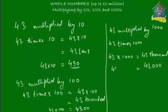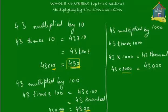So what's the pattern here? Well, the pattern is that when you're multiplying by 10, which has only one zero, the product has only one zero. The result of multiplying two numbers is called the product. So 430 is the product. When you multiply a number by 10, the product will have one zero. When you multiply by 100, the product will have two zeros. And when you multiply by 1000, the product will have three zeros.